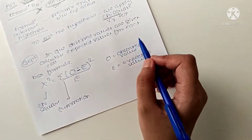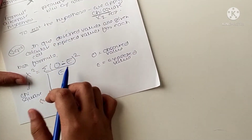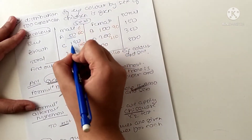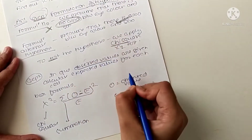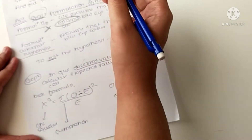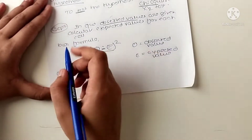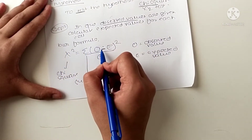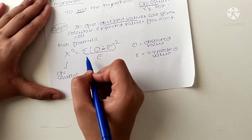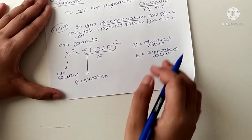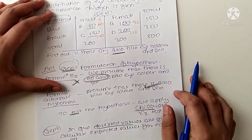Step two is we have to calculate the expected value. The values given in the question are the observed values. We have to calculate the expected values because the formula of the chi-square test is: chi-square equals summation of (observed minus expected) squared divided by expected value, where O is observed and E is expected.